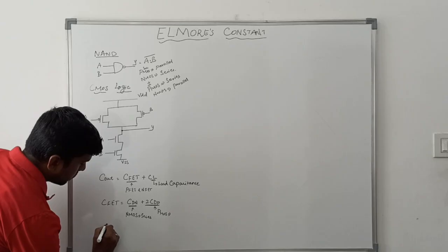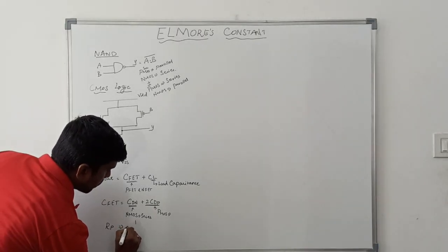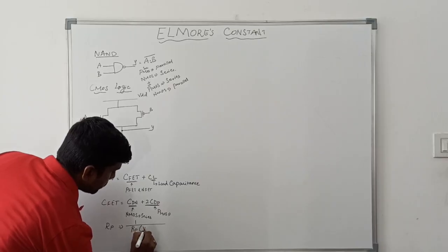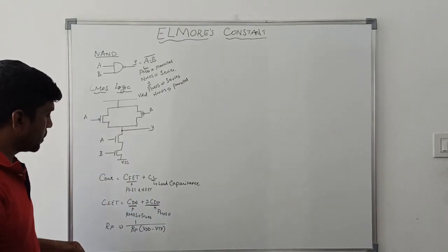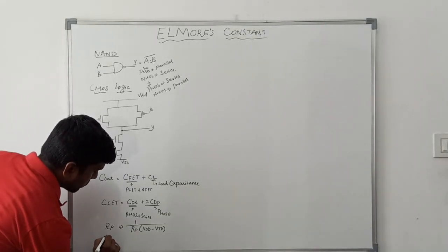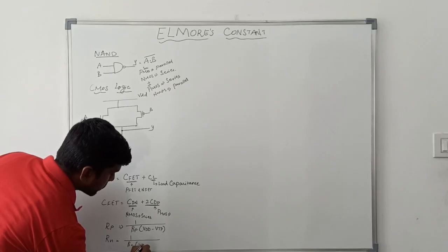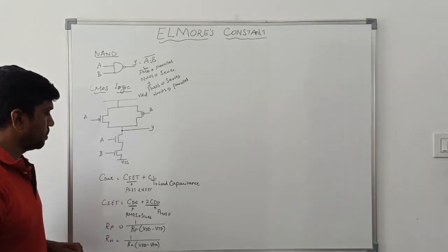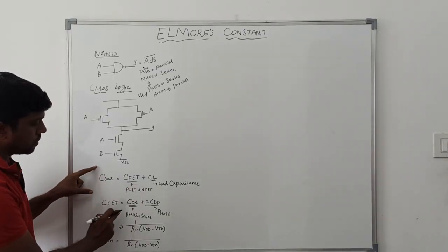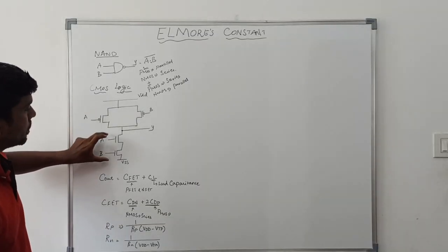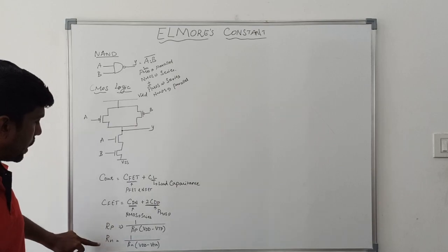Now I find the resistance values. RP represents resistance for the PMOS transistor, with value 1 divided by beta_P times (VDD minus VTP), where VTP is the threshold voltage and VDD is the supply voltage. Now find resistance for NMOS transistor: RN equals 1 divided by beta_N times (VDD minus VTN). First find the output capacitance by adding Cfit plus CL, then find RP and RN values.